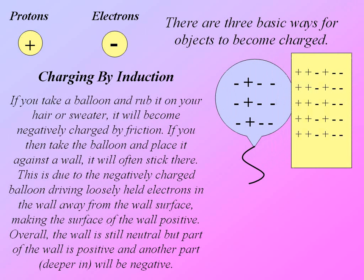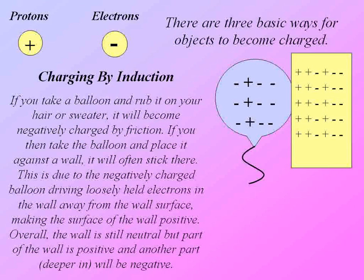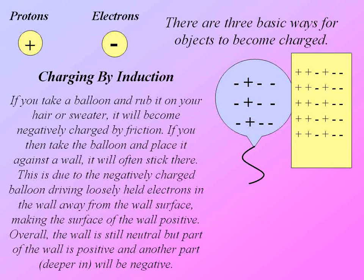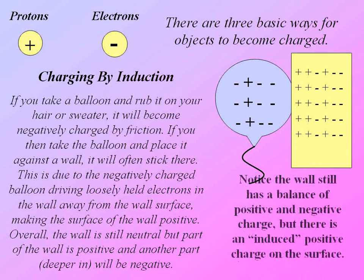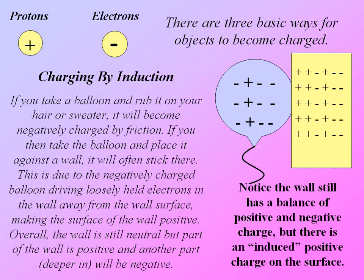Overall, the wall is still neutral, but part of the wall is positive, and another part, deeper in, will be negative. Notice the wall has a balance of positive and negative charge, but there is an induced positive charge on the surface.